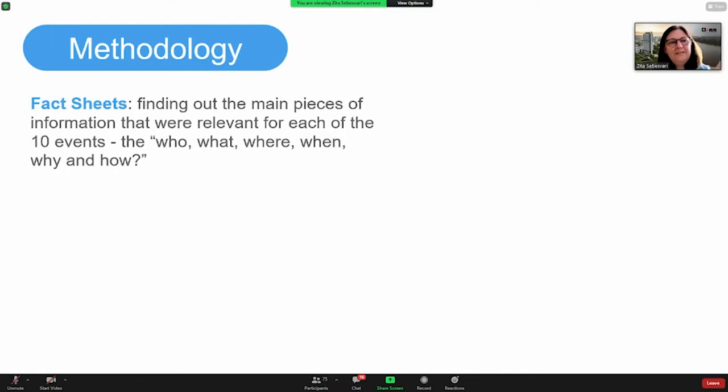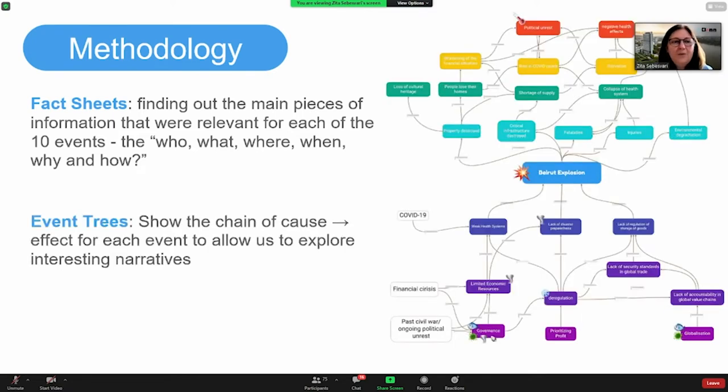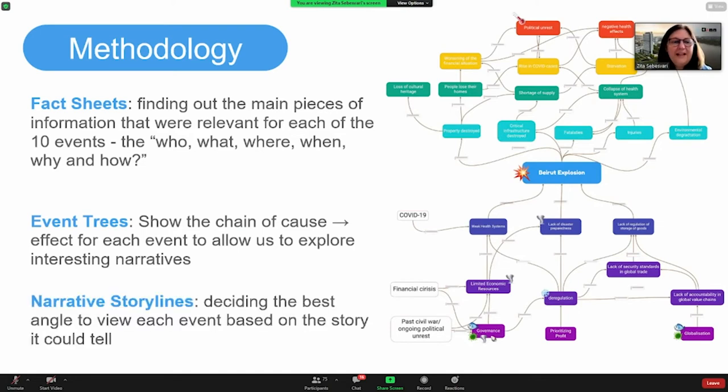So we developed for each event a fact sheet, you could say, the science base, where we looked at what happened and why and where and how. And then we developed for each event a simplified event tree, where we looked into the root causes, drivers, primary impact, secondary impacts, and also emerging risks. To try to understand what belongs to this event. And then along these trees, we developed narrative storylines.